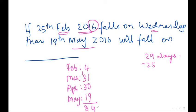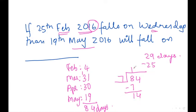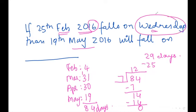The total is 84 days. In a week there are 7 days, so we divide 84 by 7. This is a short trick — with this you can solve any type of calendar sum. The remainder is zero, so as the remainder is zero, we consider our starting day — Wednesday — and 19th May also falls on Wednesday.